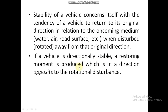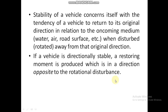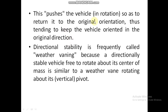If a vehicle is directionally stable, a restoring moment is produced which is in a direction opposite to the rotational disturbance. For example, if this is your disturbing moment, a directionally stable vehicle or plane will produce a couple opposite to the disturbing couple, which will direct it in the forward direction so that stability is maintained. This pushes the vehicle so as to return to its original orientation, thus tending to keep the vehicle oriented in the original direction.